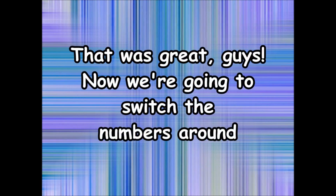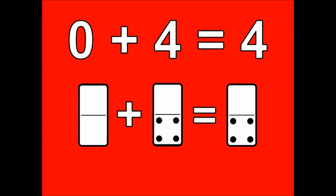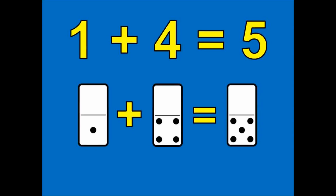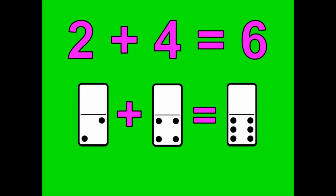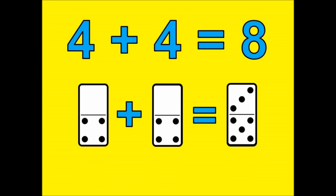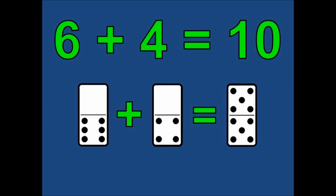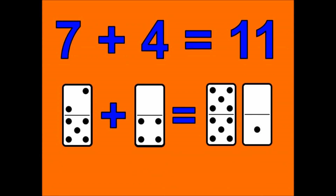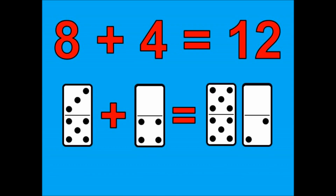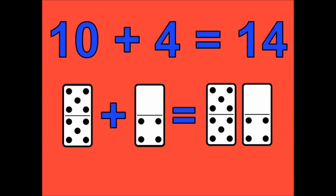That was great guys. Now we're gonna switch the numbers around. We're gonna start with zero plus four and go up to ten plus four. You ready? Let's go. Zero plus four is four. One plus four is five. Two plus four is six. Three plus four is seven. Four plus four is eight. Five plus four is nine. Six plus four is ten. Seven plus four is eleven. Eight plus four is twelve. Nine plus four is thirteen. Ten plus four is fourteen.